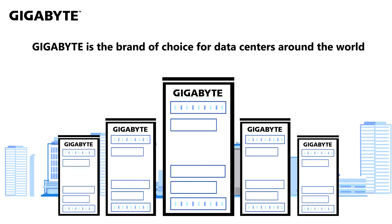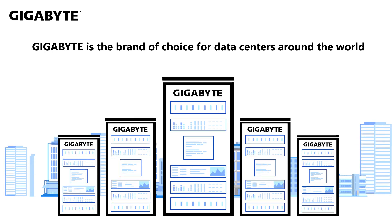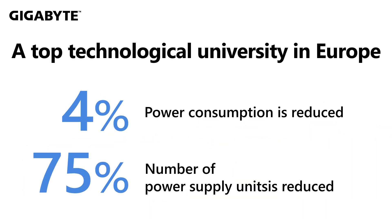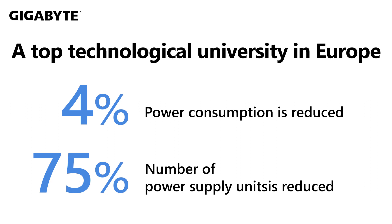Gigabyte is the leading choice for server solutions used in data centers around the world. Our servers support various operating systems and platforms, and come in sizes ranging from 1U to 5U. For example, a top technical university in Switzerland uses our Gigabyte H-262-Z63 to provide high-performance computing in a limited space, reducing power consumption and the number of power supply units by 75%.